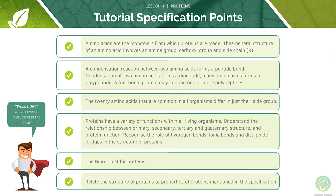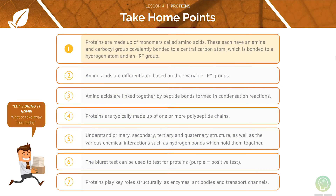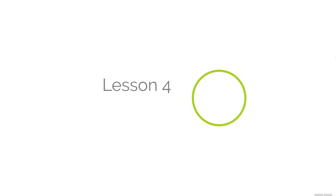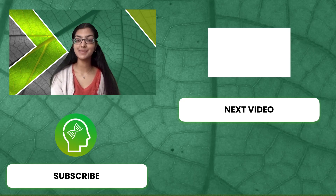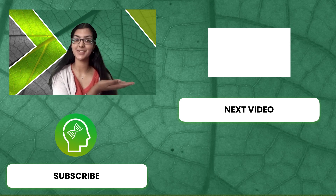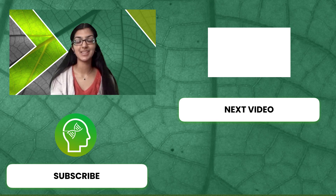We've now covered all the specification points for this section. Feel free to skip back through the video and re-watch anything you feel unsure about. Let's go through our take-home points: proteins are made up of monomers called amino acids, which can be differentiated by their R groups; they are linked by peptide bonds; and proteins are made up of one or more polypeptide chains. We looked at the structures of proteins and how to detect them, and finally we looked at their roles. We've now completed lesson four. Make sure to subscribe and leave a comment on the topic you'd like to see a video on. Click here to watch the rest of our videos in our A-level biology series, or visit our website, studymind.co.uk, for past paper compilations by topic and specification.